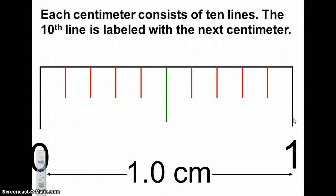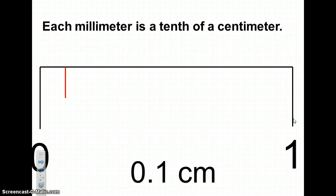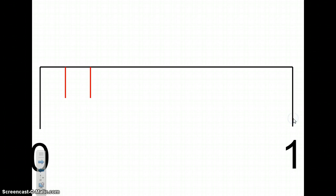Each centimeter consists of 10 lines. The 10th line is labeled with the next centimeter. Each millimeter is a tenth of a centimeter. This is showing 1 tenth of a centimeter. This one is showing 2 tenths, 3 tenths, and 4 tenths. Notice at 5 tenths, the line is just a little bit longer.